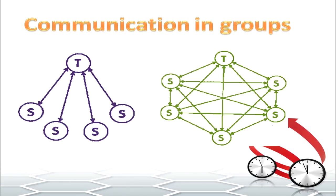Next we come to communication in groups. Depending on the type of activity, the group can be teacher-centric, where the teacher directly interacts with each student group and there is no interaction between the groups — as seen on the left of the diagram. The second type of communication is where the groups interact with each other as well as the teacher.